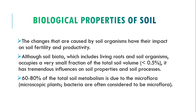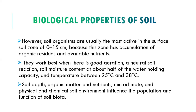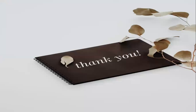Soil organisms are usually most active in the surface soil zone of about 0 to 15 centimeters, because within this zone there is an accumulation of organic residues and available nutrients. They work best when there is good aeration, a neutral soil moisture content at about half of the water-holding capacity, and a temperature of about 25 to 38 degrees Celsius. Soil depth, organic matter, nutrients, microclimate, and the physical and chemical soil environment all influence the population and function of the soil biota.